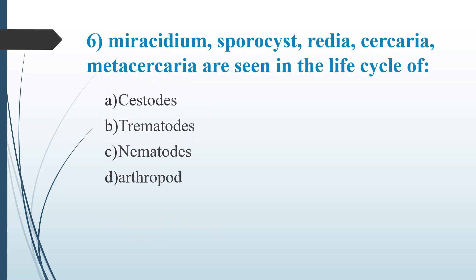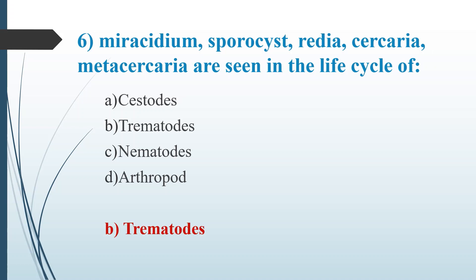Sixth question: Miracidium, Sporocyst, Redia, Cercaria, Metacercaria are seen in the life cycle of? Option A, Sistos. Option B, Trematodes. Option C, Nematodes. Option D, Arthropods. Answer is Option B, Trematodes. Examples of Trematodes are Fasciola hepatica, Blood Flukes, Paragonimus westermani, Fasciolopsis buski, etc.